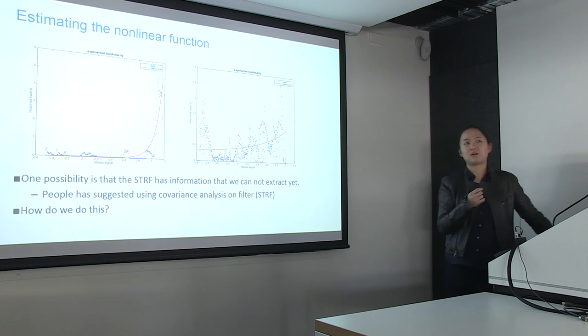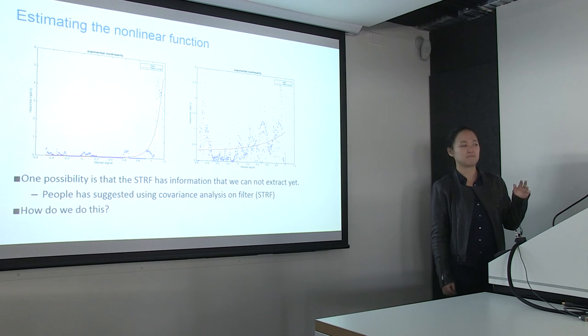To sum up, there are two main questions. First, how do we quantify different STRFs? And second, how do we get this information out of the STRFs so that we can predict neural response?